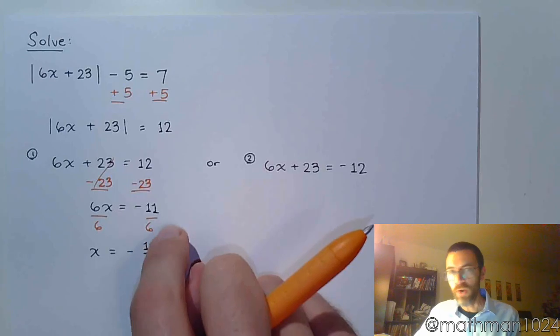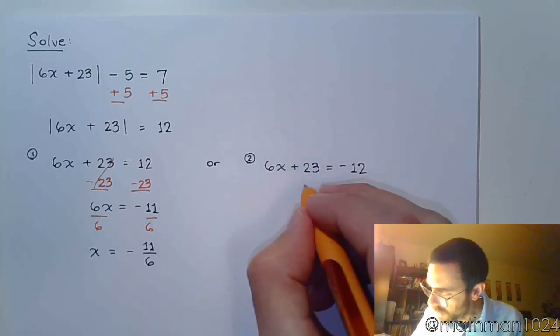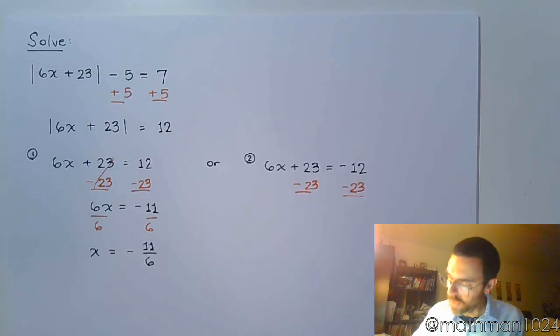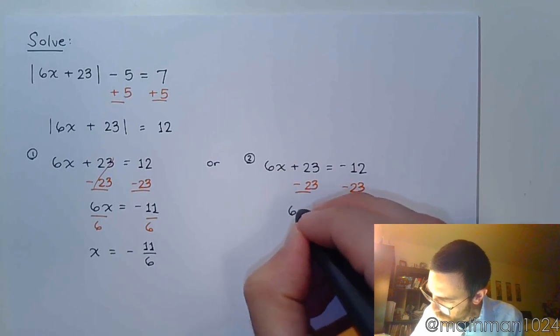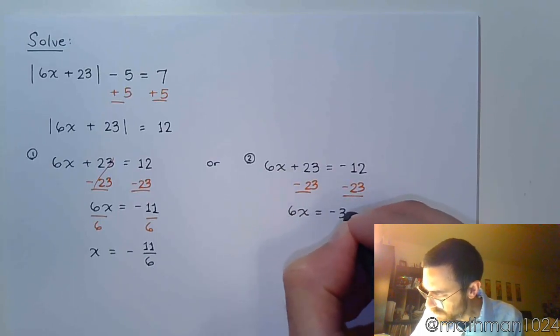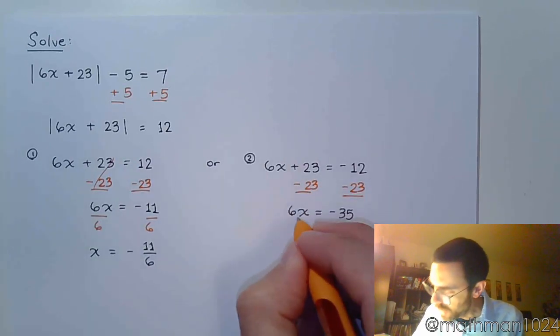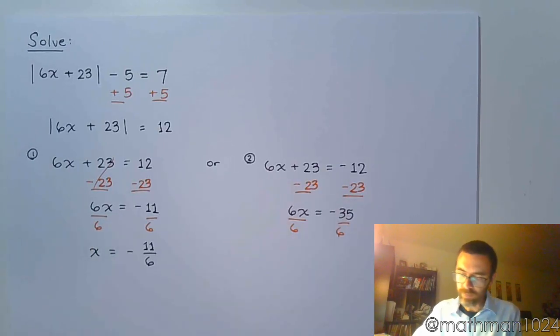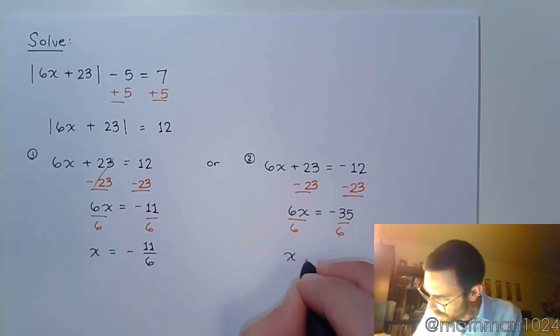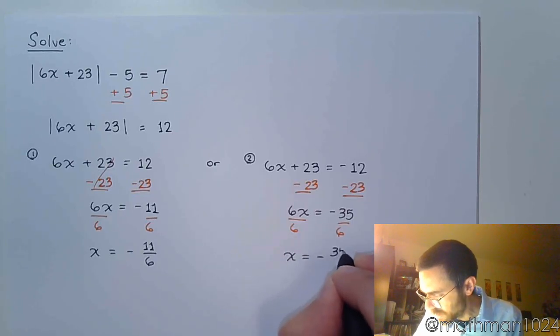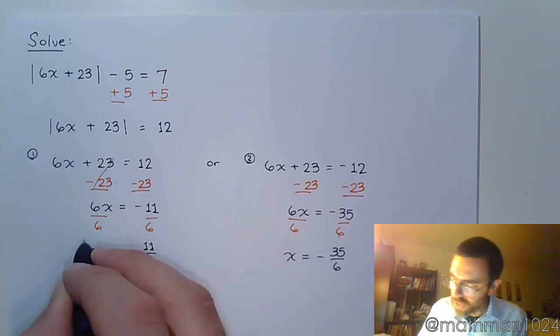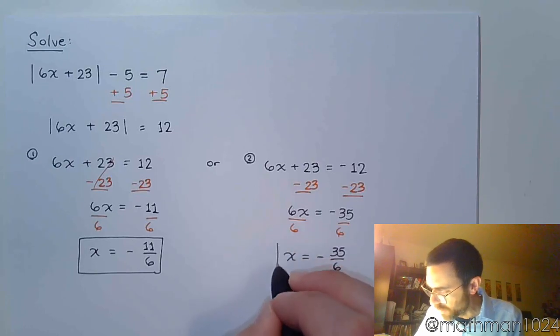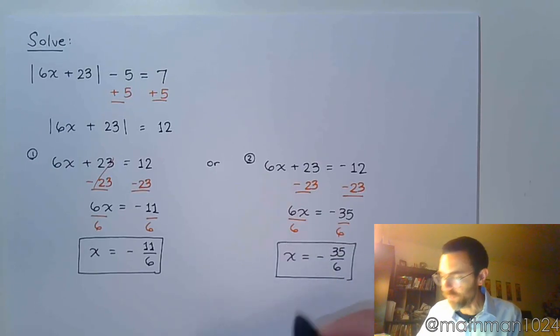And the steps that I took here in orange are going to be the same steps I'm going to take over here. I need to subtract 23 on both sides again. And so now we have 6x is equal to negative 35. Divide both sides by 6 just like I did here. So x is equal to negative 35 over 6. Reduce these as best you can but there is nothing for us to do. Cannot reduce those at all. And that's it.